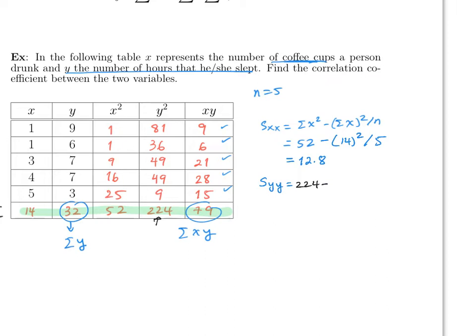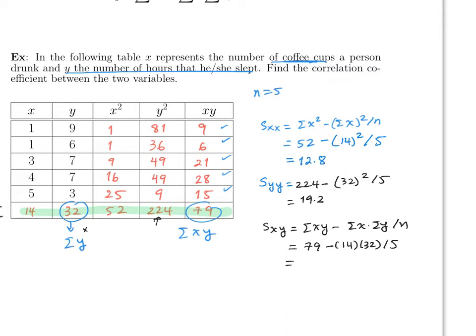S_yy = sum of y² minus (sum of y)² divided by n = 224 minus 32² divided by 5 = 19.2. This must also be positive — it is. S_xy = sum of xy minus (sum of x)(sum of y) divided by n = 79 minus (14 × 32) divided by 5, which is approximately minus 10.6.